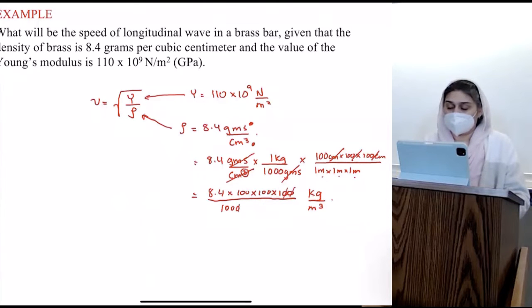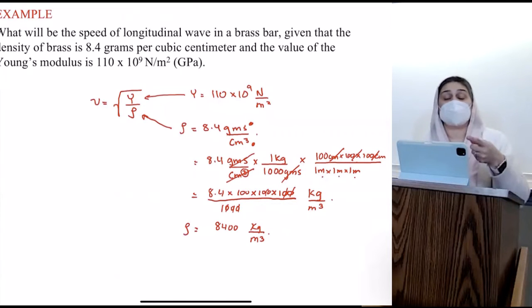So somebody do the math. It'll be technically 8,400 kilograms per meter cubed. So that is my density. Now I can plug them in, take the square root, and find the answer.